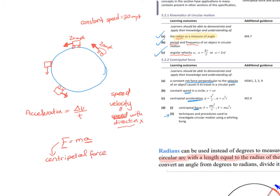In circular motion we call this resultant force the centripetal force. The word comes from Greek and means 'center-seeking' — the force always points towards the center. Centripetal force is not a new real force like weight or friction; it's simply a nickname for the resultant force in circular motion, which always acts towards the center of the circle.